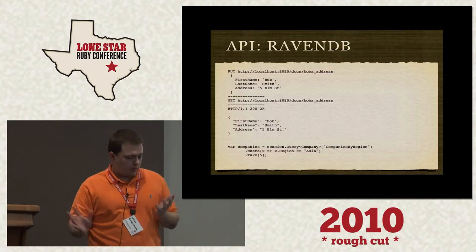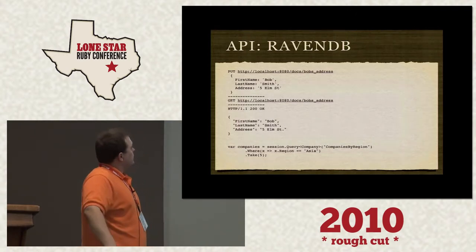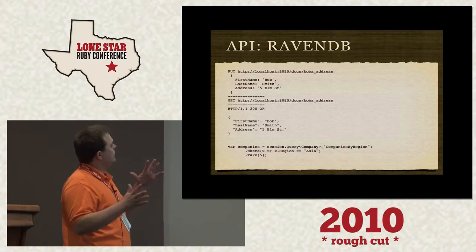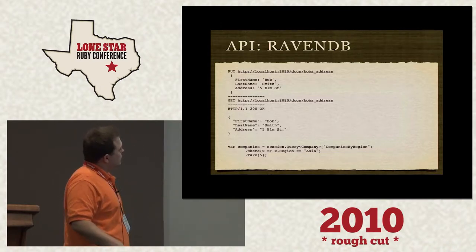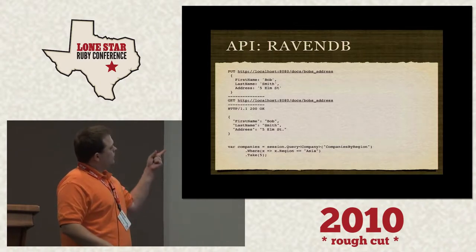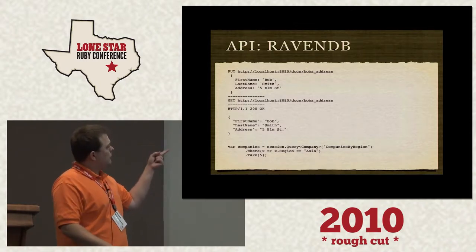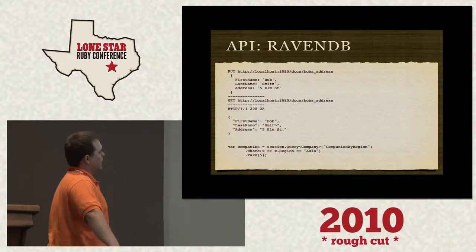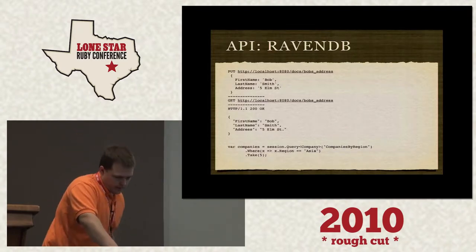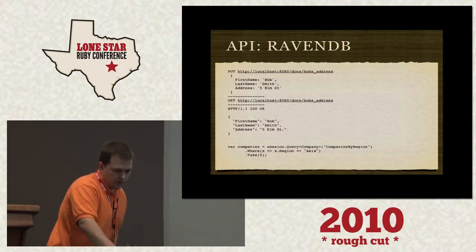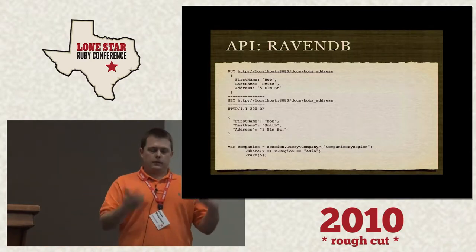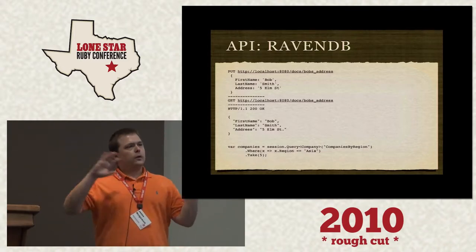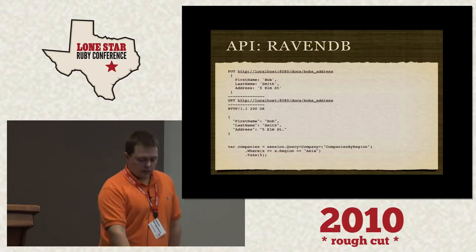On to RavenDB. It's your general put/get with JSON. Down at the bottom there's some LINQ code that at least half of you can read but probably don't want to write. It's set up to easily get into LINQ, and in fact when you do your querying and your map-reducing, all of your indexes are defined as LINQ queries.